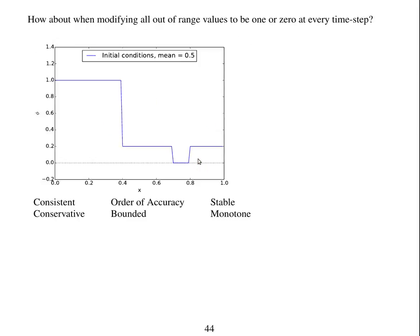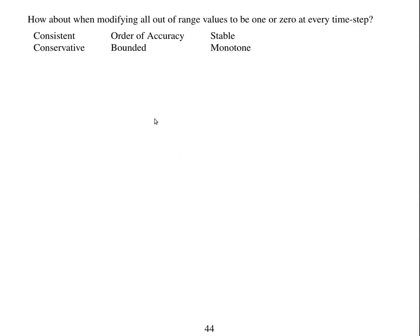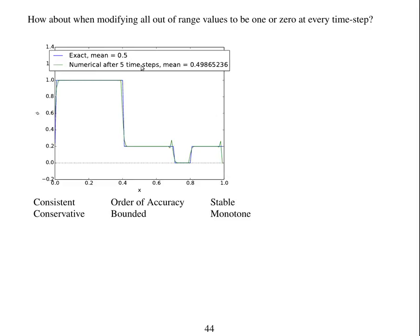So let's try modifying this advection scheme. I've modified this advection scheme so that if a value is calculated which is either less than zero or greater than one, it's just edited. So if a value is greater than one, it's set to one. And if a value is less than zero, it's set to zero. So this should generate a bounded scheme because that's exactly what it's supposed to be doing. What other properties does it have? I'll run the simulation again.